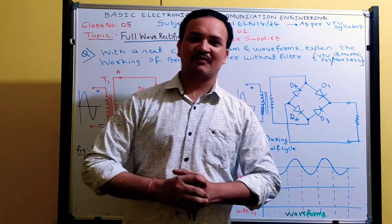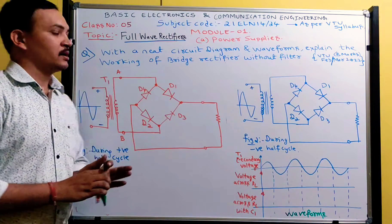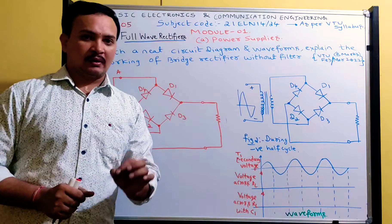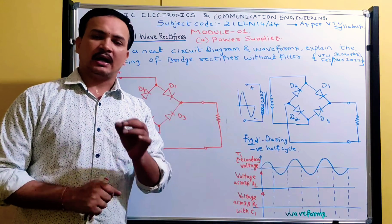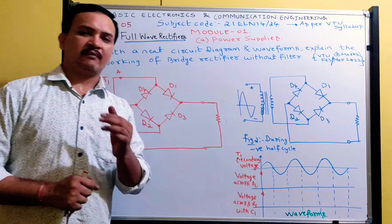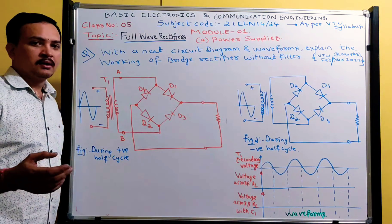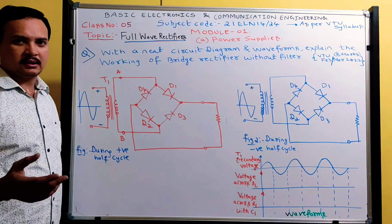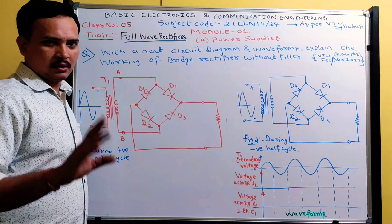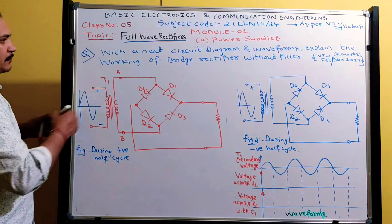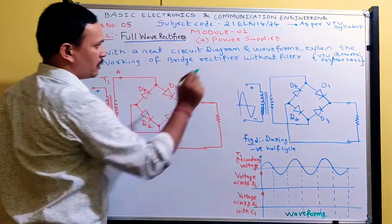Welcome to the Basic Electronics YouTube channel. Today's topic is the full wave rectifier. I'm going to explain the bridge rectifier. There are two types of full wave rectifiers: the biphase rectifier and the bridge rectifier. The biphase rectifier was covered in the previous video. In your syllabus, only these two types are mentioned: biphase and bridge rectifier.